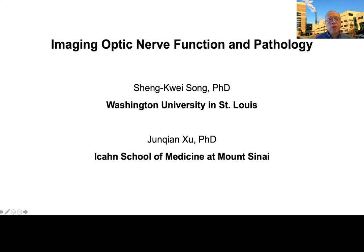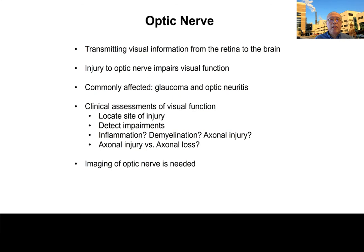Our approach is to develop a method for imaging of the nerve function and pathology directed from the human. The optic nerve is a vital tissue transmitting visual information from the retina to the brain. Optic nerve injury usually leads to impaired visual function or even visual loss, and it is commonly affected in various diseases and injuries. For example, glaucoma and optic neuritis are the two diseases that commonly affect the optic nerve.